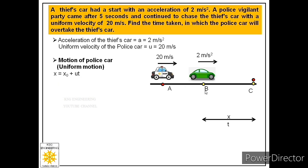For the uniform motion of police car we write the equation as x = x₀ + ut. Here x is the distance between point B and C, x₀ is the initial distance which is 0 since we are considering motion from B to C only, u is the uniform velocity of police car which is 20 meter per second, and t is the time taken by police car to cover that distance from B to C. Substituting values we get x = 0 + 20t. This equation has two unknowns x and t, so let us call this equation number 1.